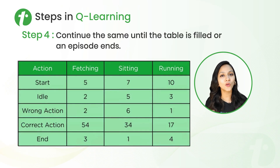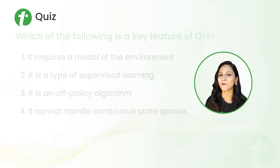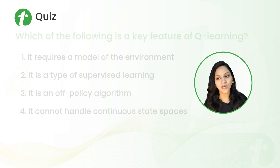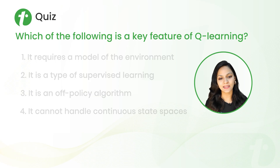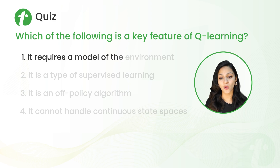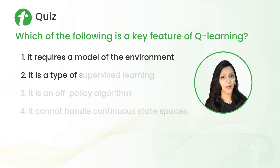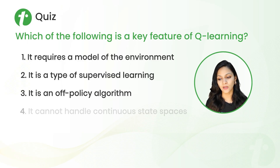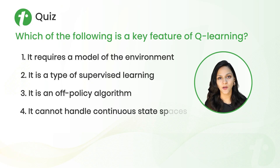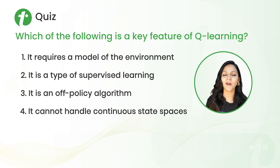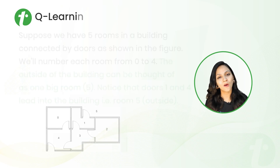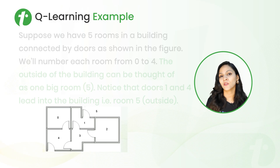Now let's understand the whole process with an example. But before that, I have a quiz for you. The question is: which of the following is a key feature of Q-learning? The options are: it requires a model of the environment; it is a type of supervised learning; it is an off-policy algorithm; or it cannot handle continuous state processes. If you know the answer, write it in the comment section.